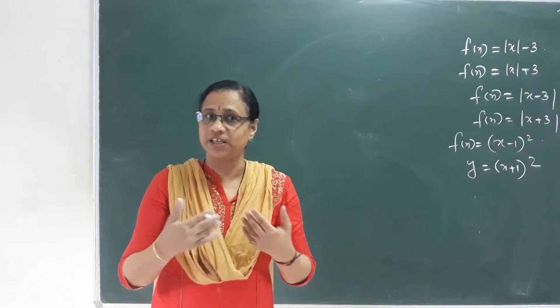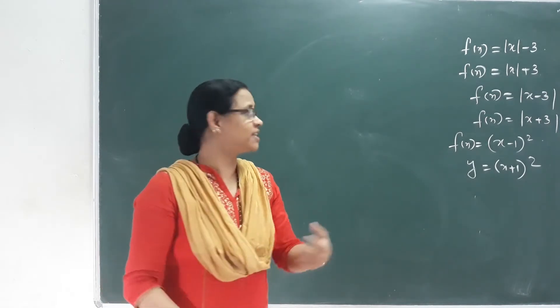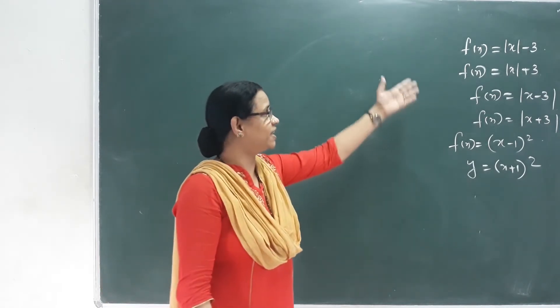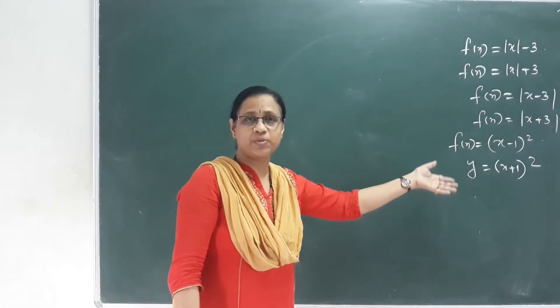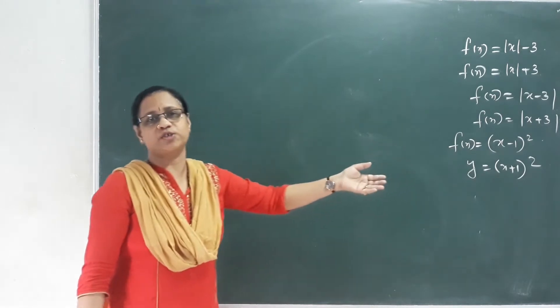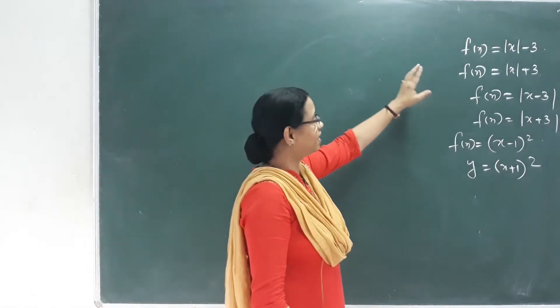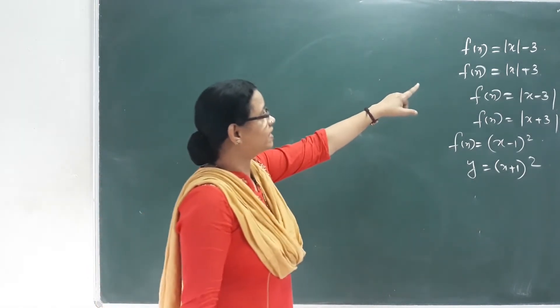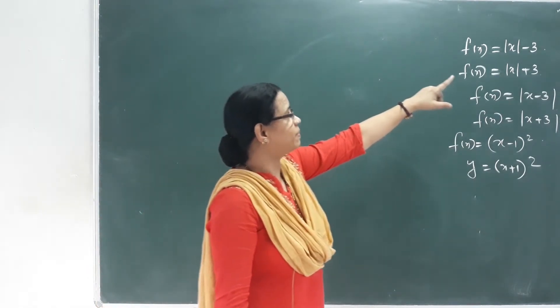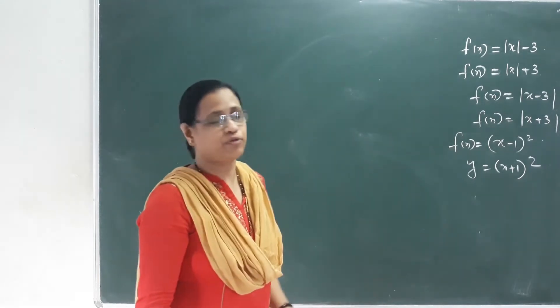If you have any questions, I'm going to write it here. F of x is equal to mod x minus 3. We have to make out a graph.